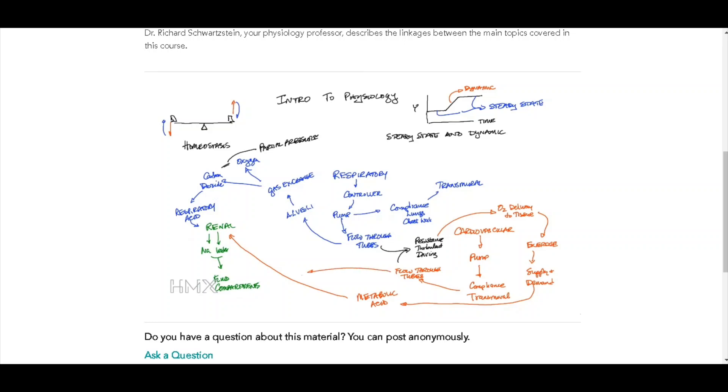So flow through tubes, particularly in the cardiovascular system, will lead us to a discussion of hydrostatic pressure and how that affects the movement of fluid into the various compartments.